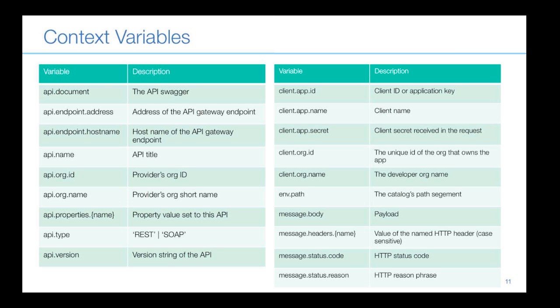A question from Dennis — also echoed by another attendee — asked whether context variables are consistent between the Micro Gateway and the DataPower gateway. Libra confirmed that is the intention: DataPower gateway also has message.body, message.header, status code and reason. If there is any inconsistency, it needs to be fixed.